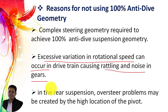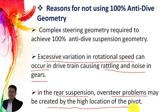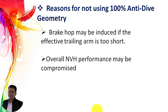The next reason is that in the rear suspension, oversteer problems may be created by the high location of the pivot point. As mentioned in the first point, for 100% anti-dive suspension geometry the pivot point is located slightly above the anti-squat position, and this will create an oversteer problem in the rear suspension geometry. The next reason is that brake hop may be induced if the effective trailing arm is too short.